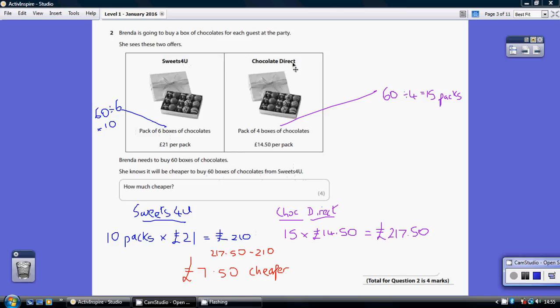Now, moving over to Chocolate Direct, there's 4 boxes in a pack. She still needs to buy 60 boxes, so that's 60 divided by 4 equals 15 packs.